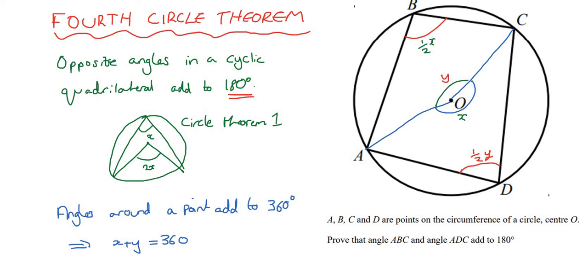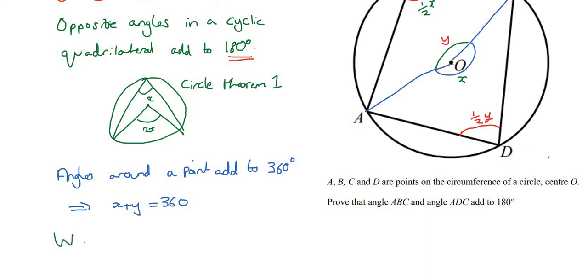Now, what can we do here? We're looking to show that ABC plus ADC equals 180. So we want ABC plus ADC to be equal to 180. But ABC is a half X, which we've just shown. And ADC is a half Y.